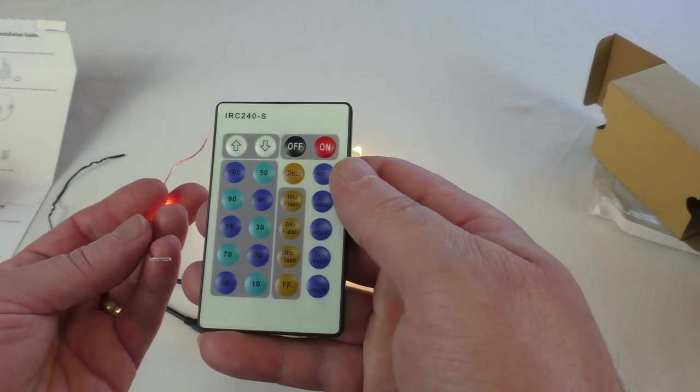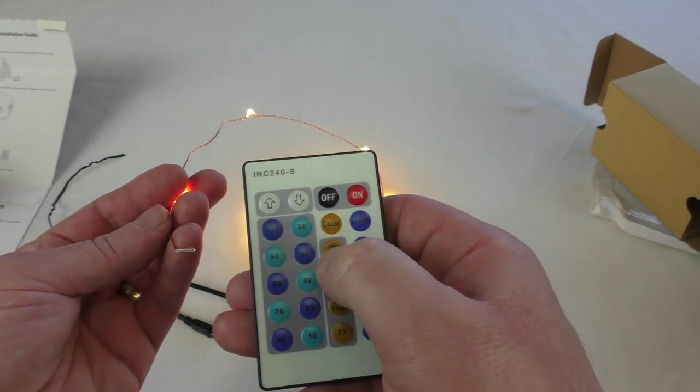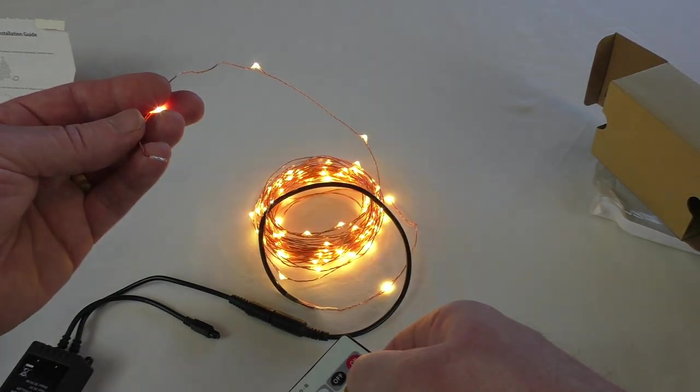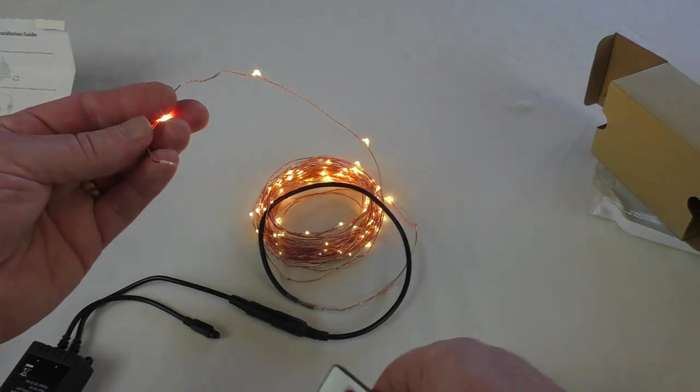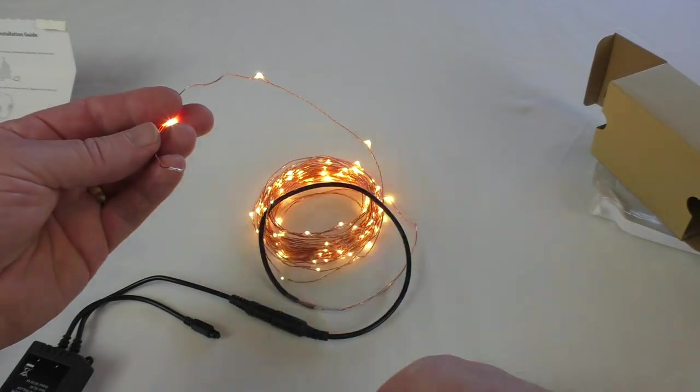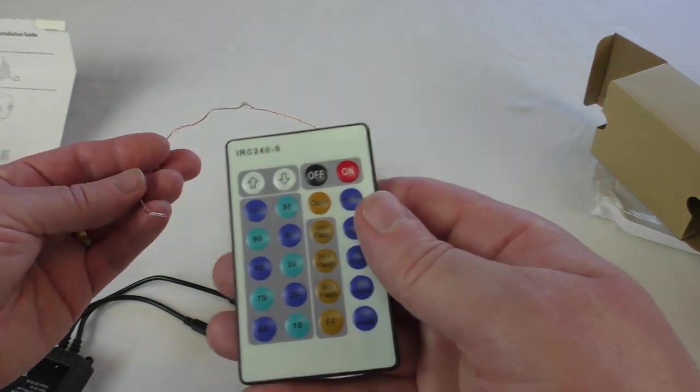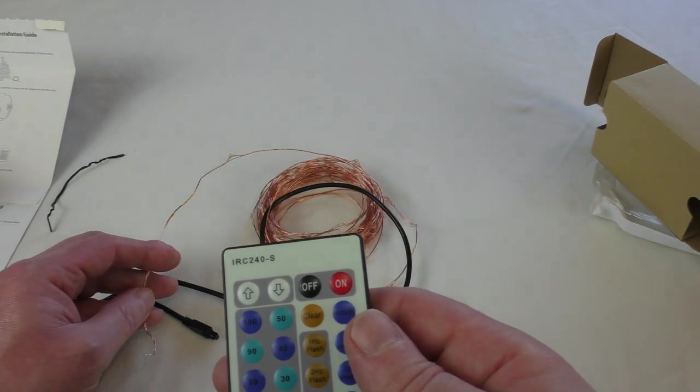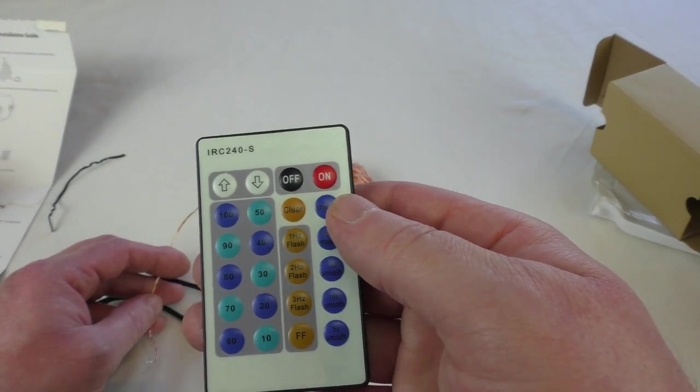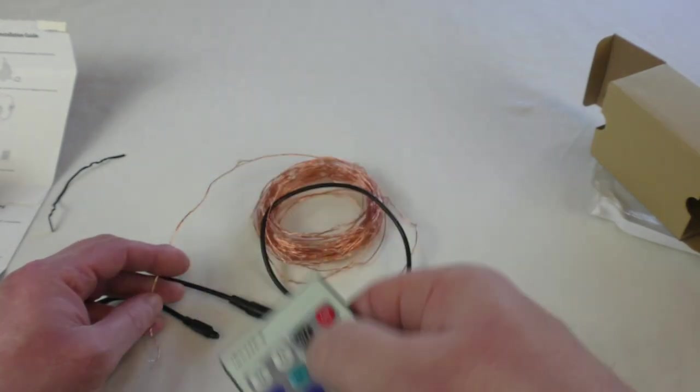Now what we've got is different flash rates. There you go, that's a one Hertz flash. Then we can go two Hertz, three Hertz. As you can see, it's getting faster. And FF, I'm not sure what that actually means, but you can see that it's basically giving like a double flash, a little bit like a traffic cone or something like that. I'm not sure what clear means, unless that's for clearing any sort of settings that you've done.